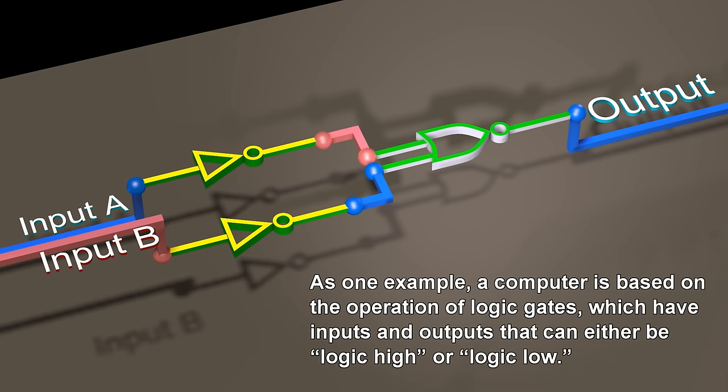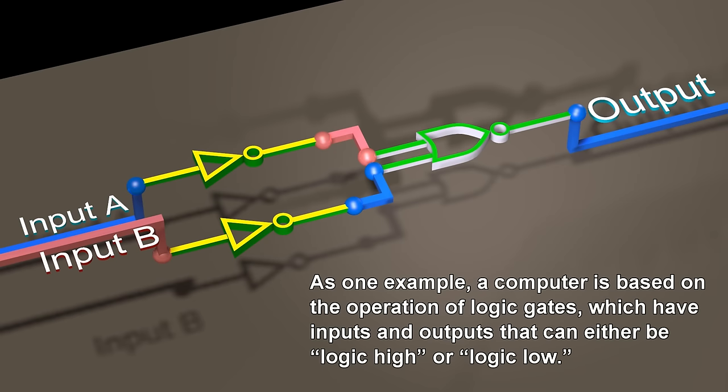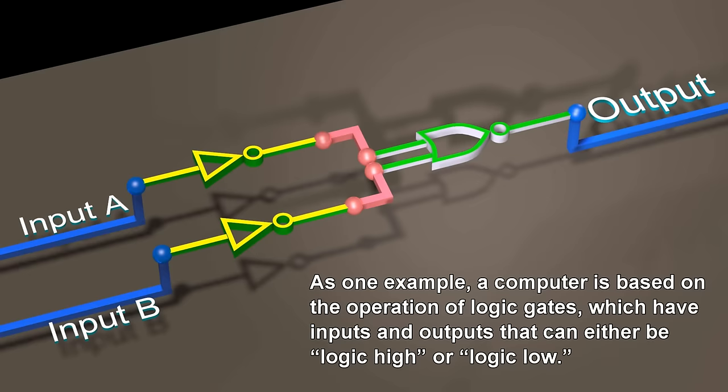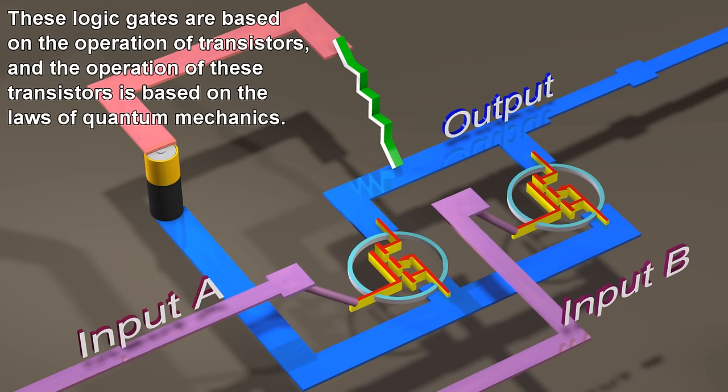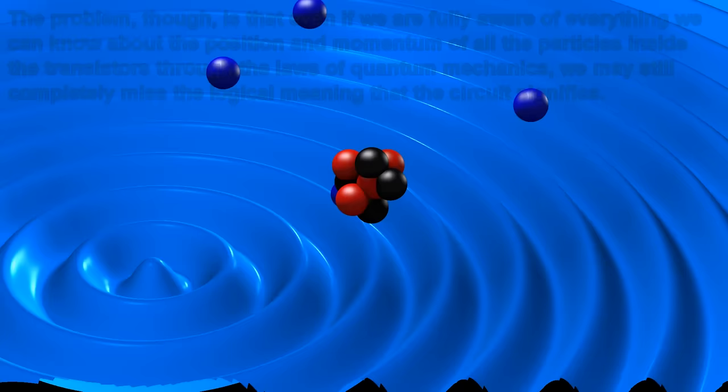As one example, a computer is based on the operation of logic gates, which have inputs and outputs that can either be logic high or logic low. These logic gates are based on the operation of transistors, and the operation of these transistors is based on the laws of quantum mechanics.